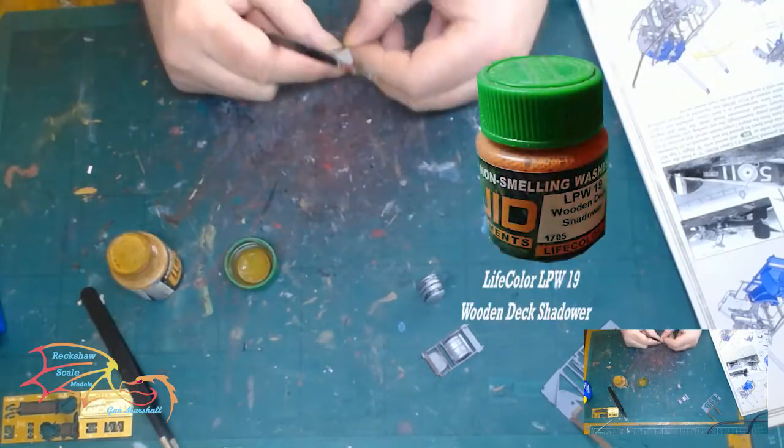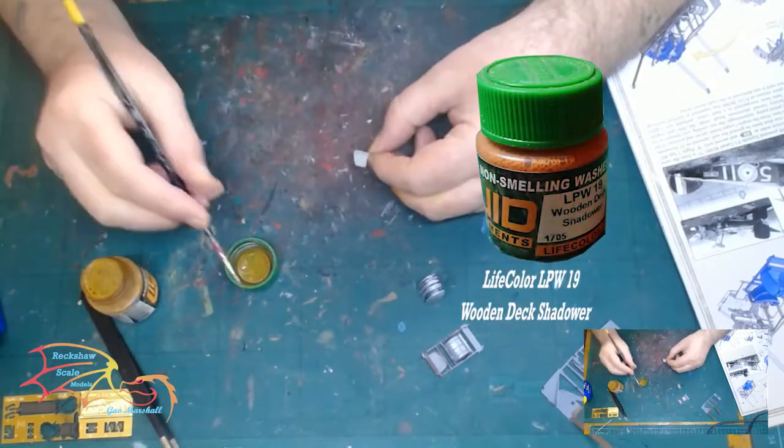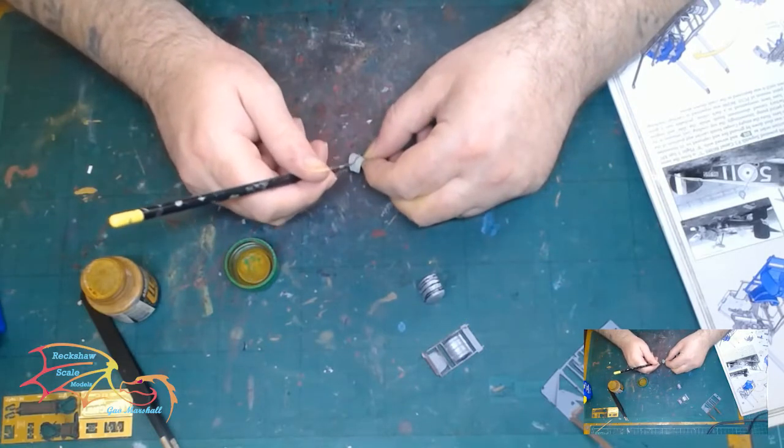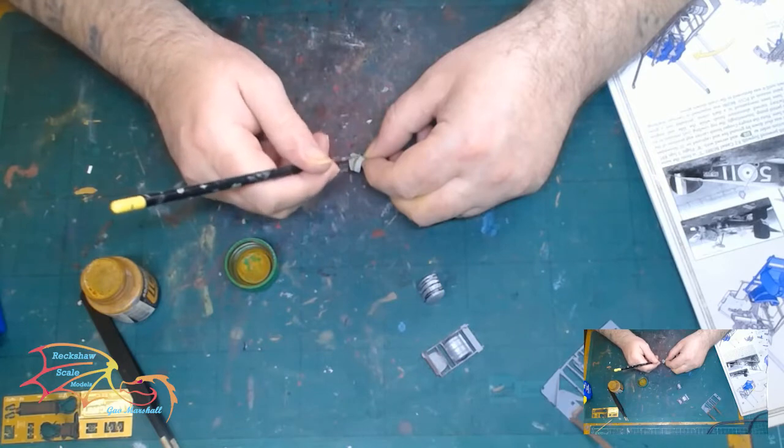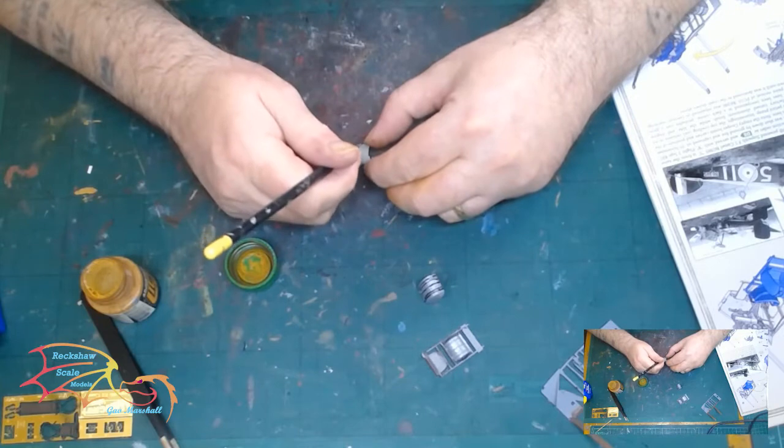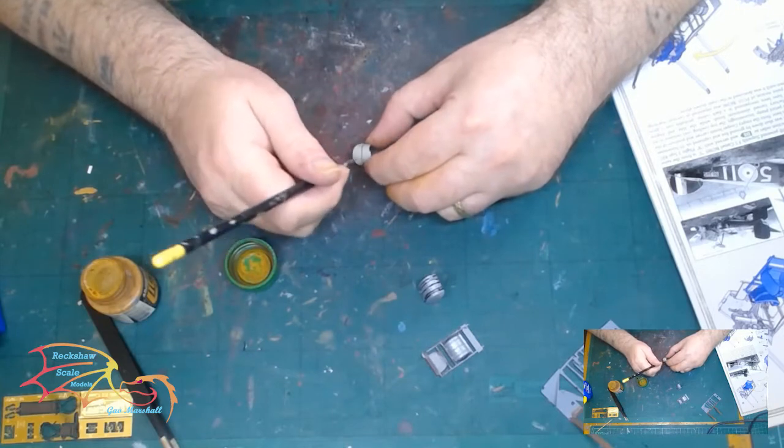Going back to the seat, it's Lifecolor LPW-19 Wood Deck Charcoal, and this is just for the highlight areas on the seat. There's a connection between the top part of the seat and the bottom, a little line, so I decided to paint that in this color.